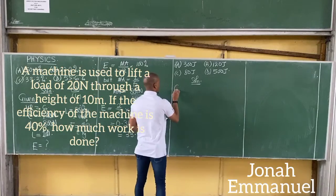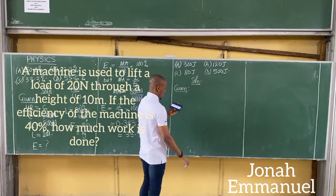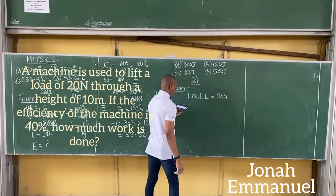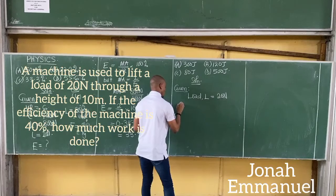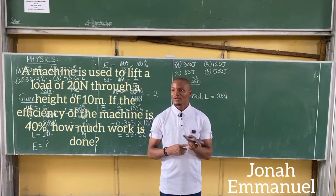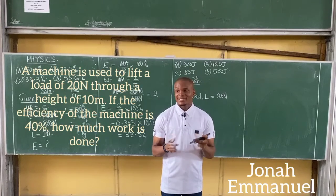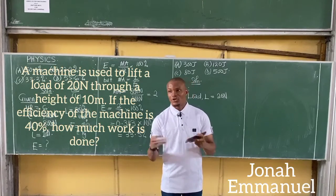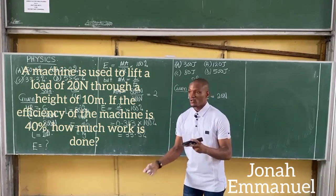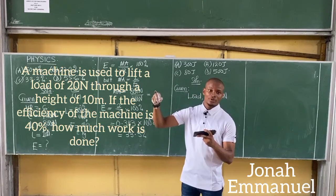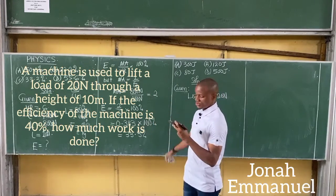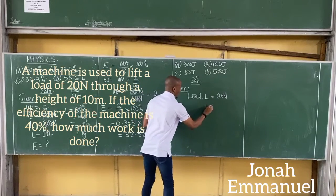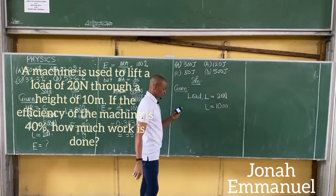Let's start with your given parameters. I am giving you: capital L — load — is 20 N. Next up, height. What does the height represent? It's a distance. Which distance? Since they say lift a load, the height becomes the distance moved by the load. That's small l, equal to 10 N.